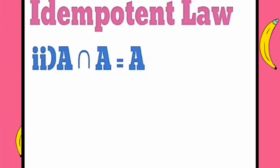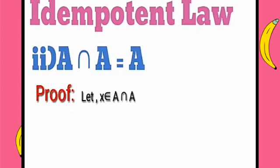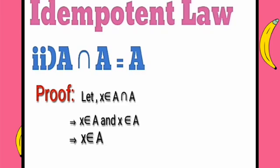The next law is A intersection A is equal to A. Let x belong to A. We can write it as x belongs to A and x belongs to A. That means x belongs to A. Hence A intersection A is equal to A.